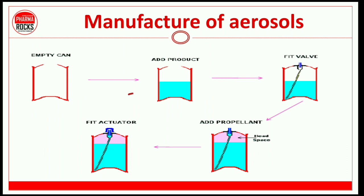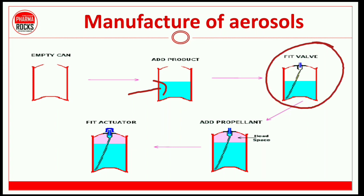Here we can see that the product is represented in sky blue color. This is our product. After that, we will fit the valve. The valve assembly consists of a dip tube, gasket, and valve.